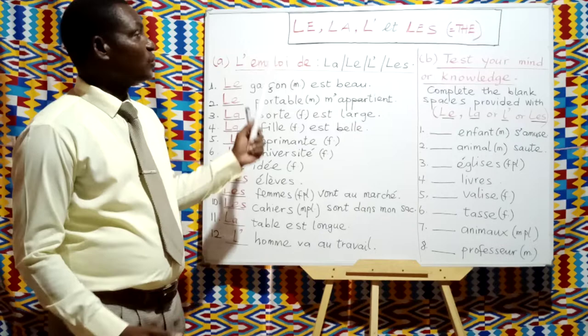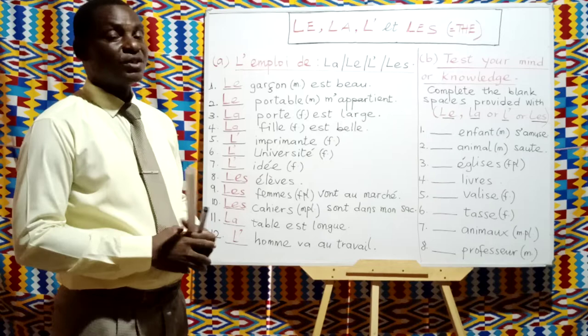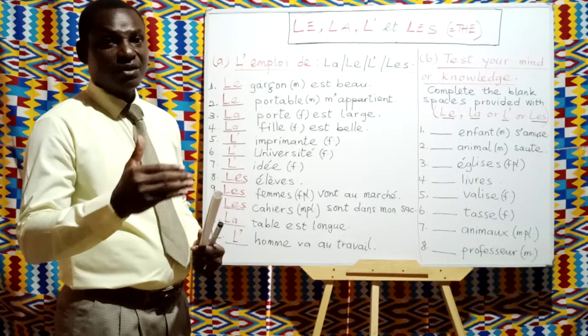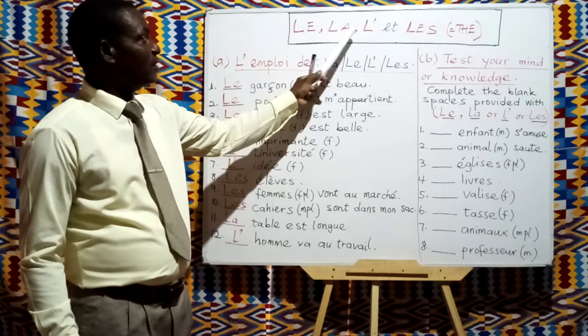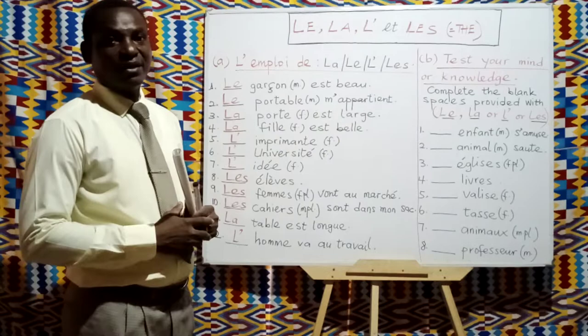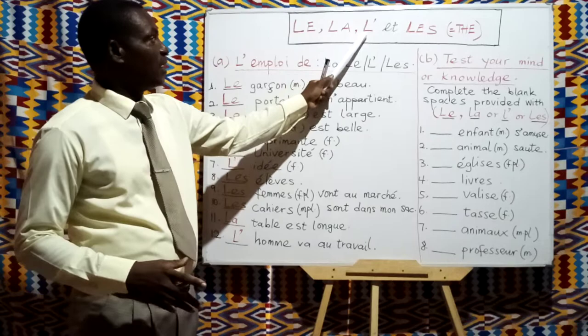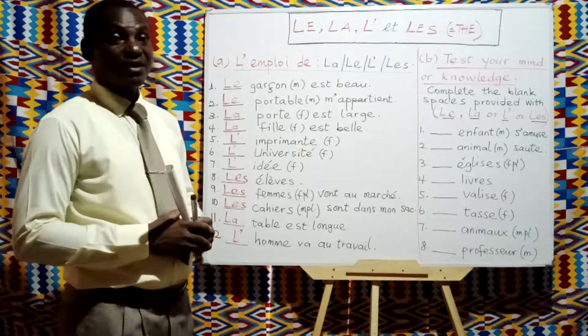In French, we have different ways of using each of the definite articles. When we look at the board, we have the spelling as the heading. We have le, la, l'apostrophe, and les. These four aspects — le, la, l'apostrophe, and les — all mean 'the', and they are all different articles.